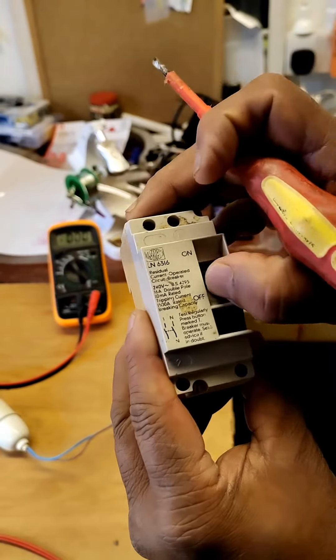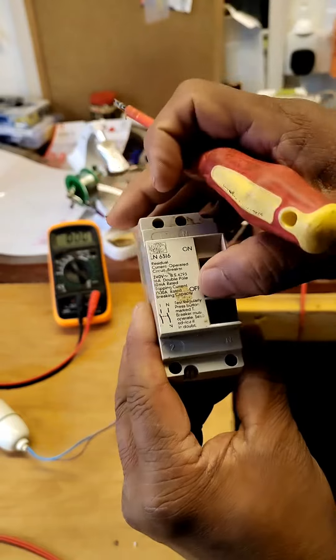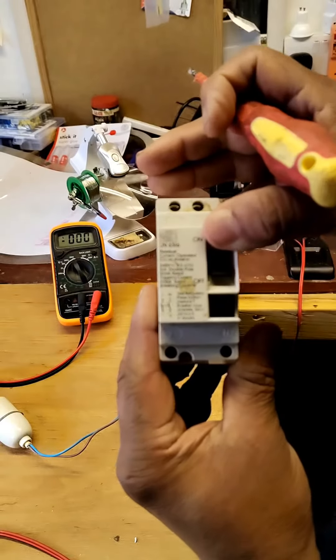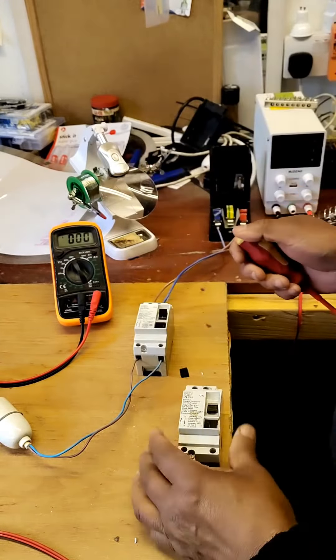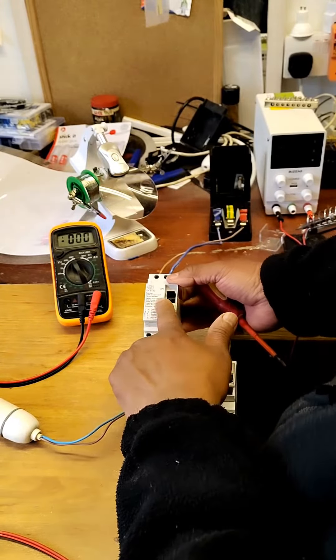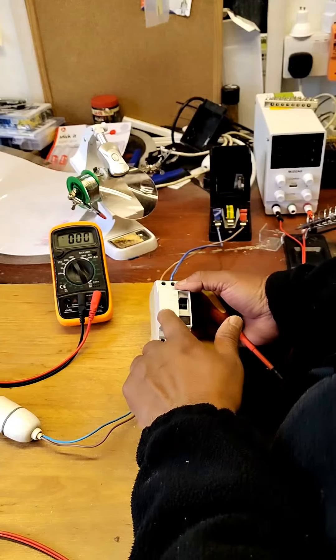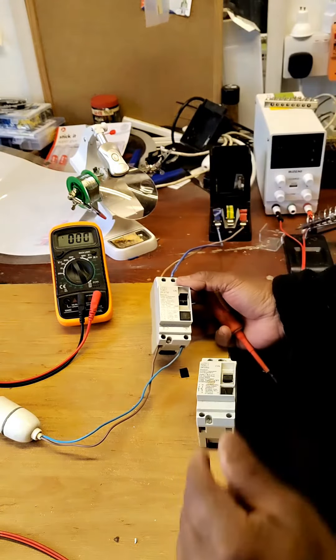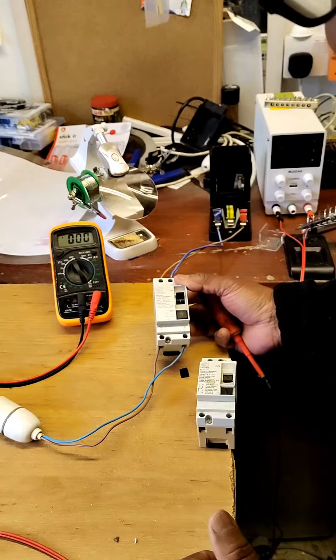This is used for any leakage current in the circuit. So this one I just showed you, it's not working, it's not latching on. So I got this one, it's exactly the same, but it's in a working condition.